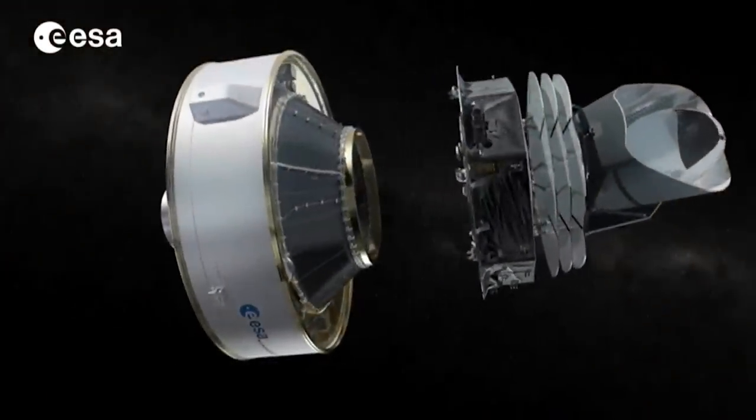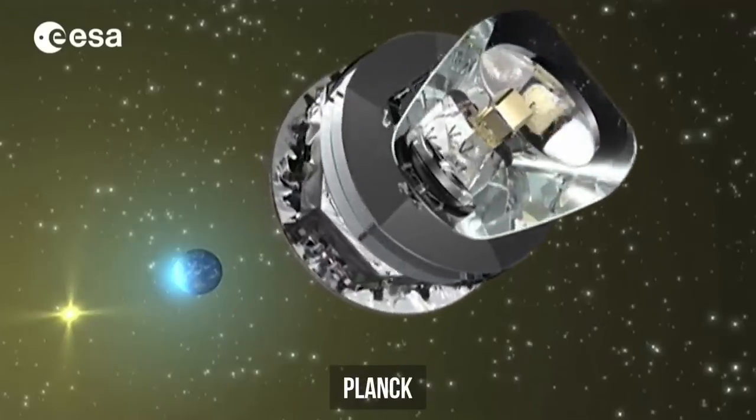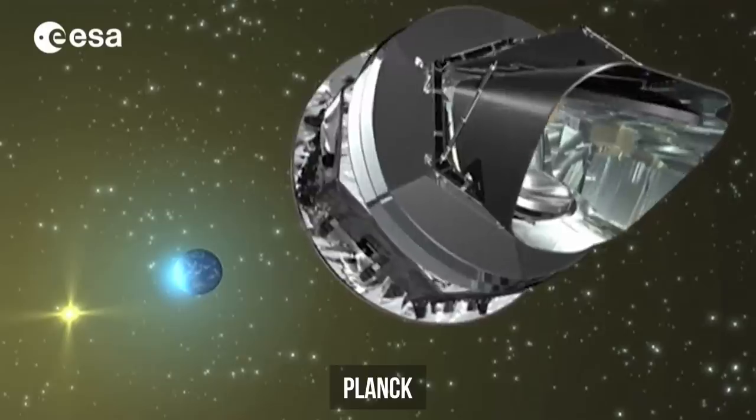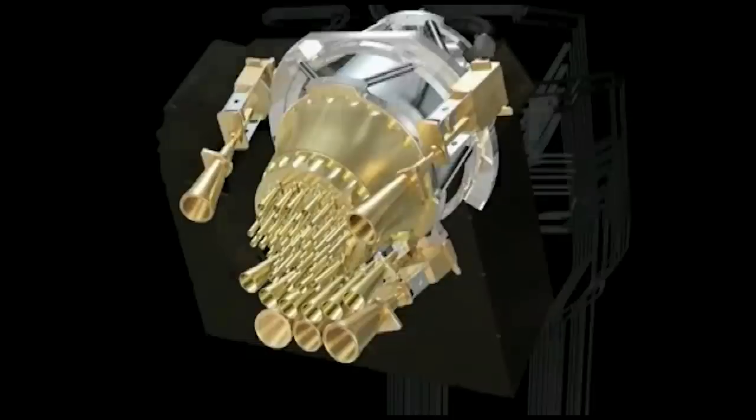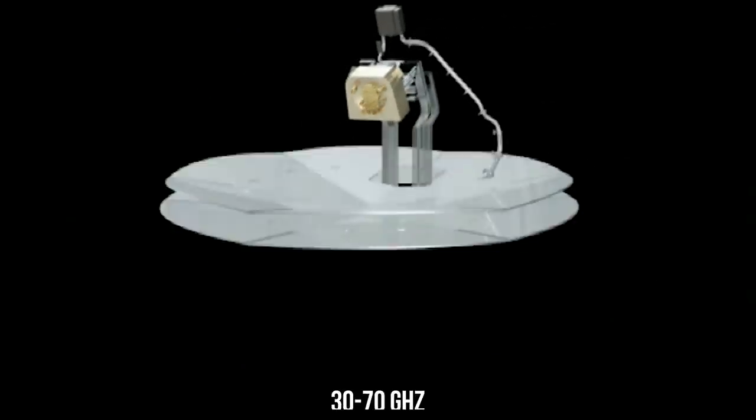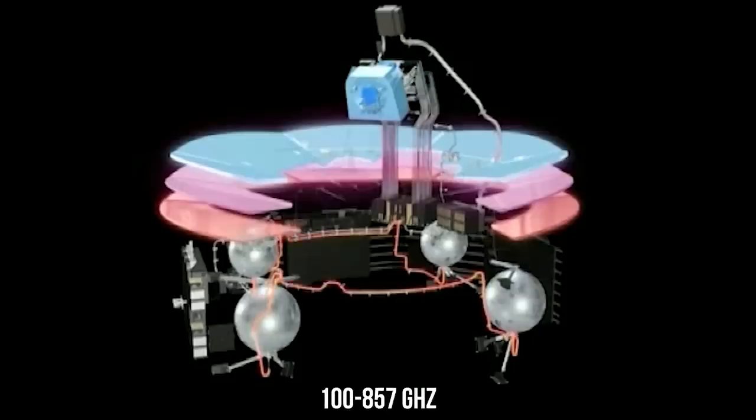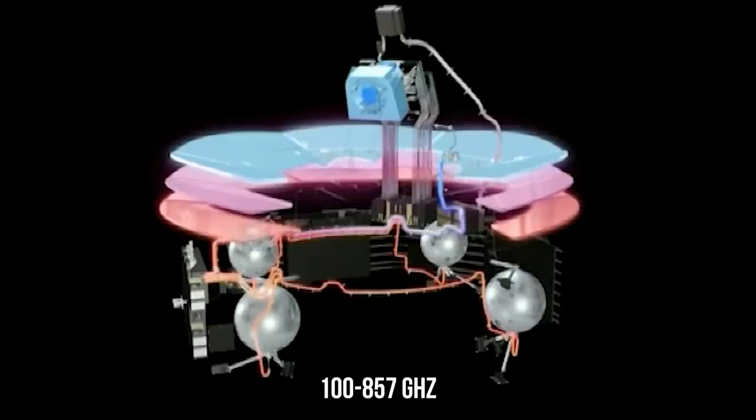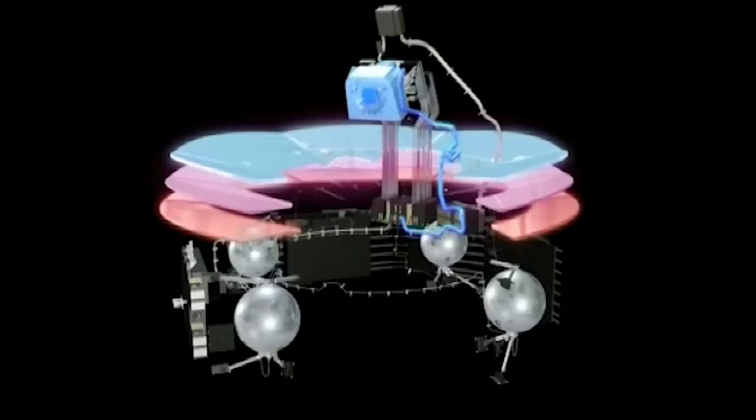In 2009, the European Space Agency launched another spacecraft to study the microwave background radiation. The Planck Telescope. It was equipped with two receivers, a low-frequency one with a range of 30 to 70 gigahertz, and a high-frequency one with a range of 100 to 857 gigahertz. Both instruments cooled down to a temperature that was only one-tenth of a degree above absolute zero.